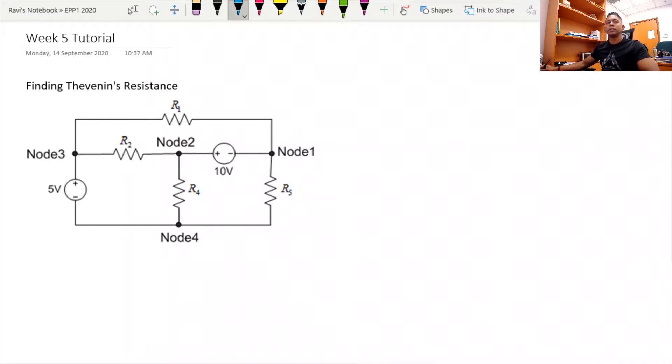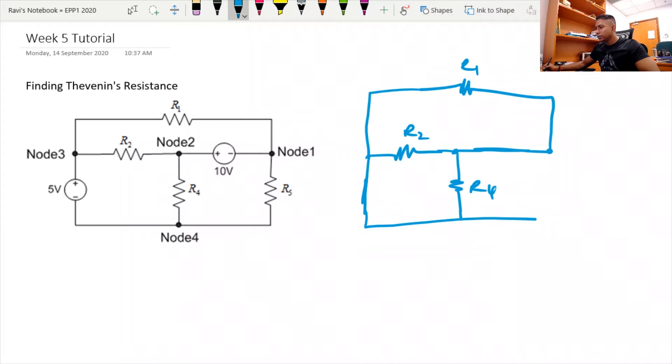For voltage sources, we replace them with a short circuit. Let me redraw the circuit first. So this 5 volts will be replaced with a short circuit here. So you have R2 here, and this is your node. And then you have R4, and then you have another short circuit here, and then you have your Node 1, and then you have your R1. Okay, so this is basically your redrawing with the sources removed.